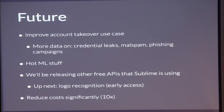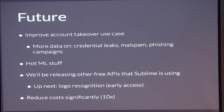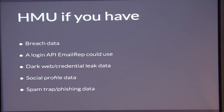Future work: we want to improve our account takeover use case by bringing in more data — more info on credential leaks, spam, and phishing. There's a lot of ML stuff we could do with this. We'll be releasing a bunch of other free APIs — as a platform, we're building these APIs for Sublime and opening them up for free. The next one is a logo recognition API for brand impersonation detection. The biggest thing is reducing costs significantly — like 10x — because we need to handle very high volumes. Hit me up if you've got breach data, credential leak data, social profile data, or run a spam trap.